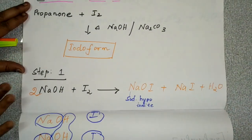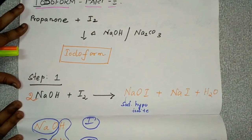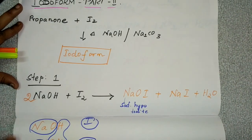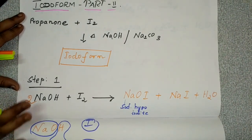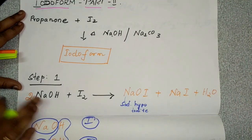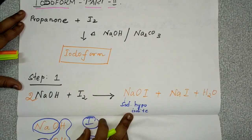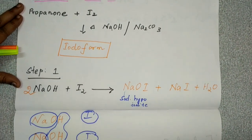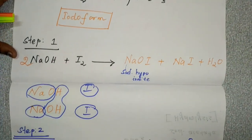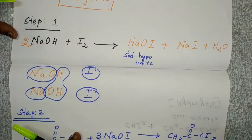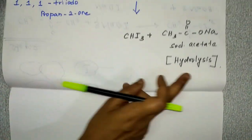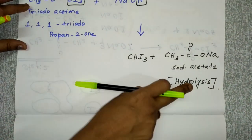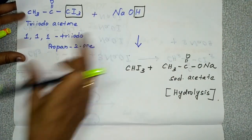This preparation involves three steps. First step: formation of sodium hypoiodide. Second step: iodination. Third step: hydrolysis by sodium hydroxide.